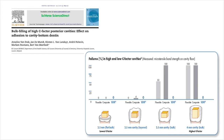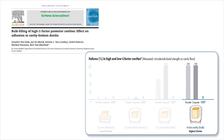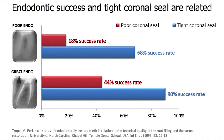In a study by Van Ende et al., 2013, they demonstrated that the microtensile bond strength decreased significantly when class 1 cavities were filled in 4 mm bulk increments using conventional flowable and regular viscosity composites, resulting in a very high percentage of pre-test failures. The SDR bulk fill material was the only product that maintained its tensile bond strength against the cavity walls in all samples tested. Several studies have confirmed the importance of coronal seal for endodontic success. In a study by Trope in 1995, they demonstrated that coronal leakage can reduce endodontic success from 90% to 18%, clearly showing how important it is to create a good coronal seal.